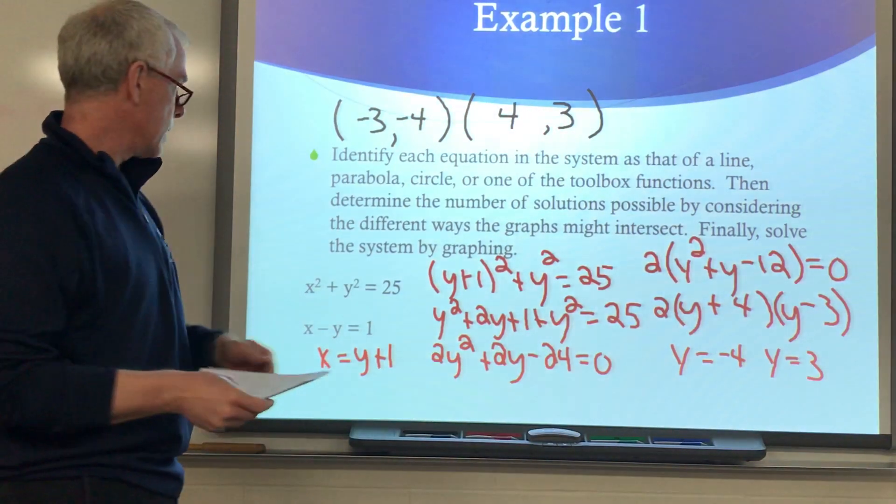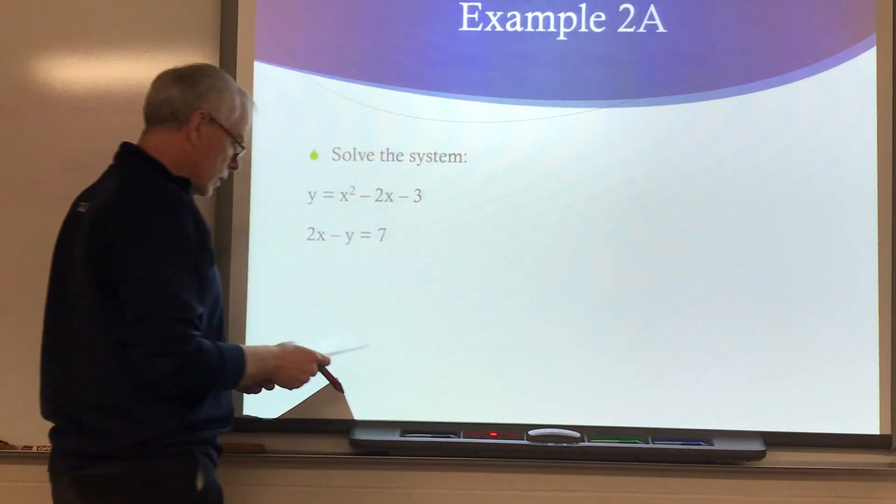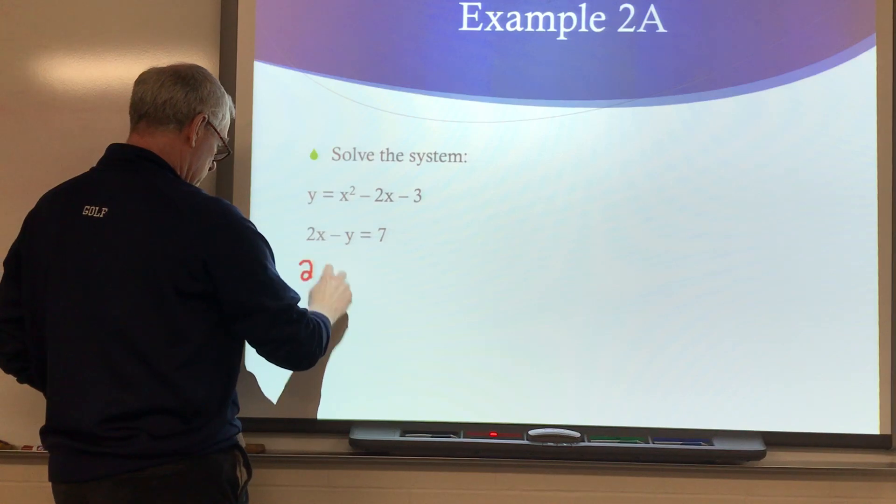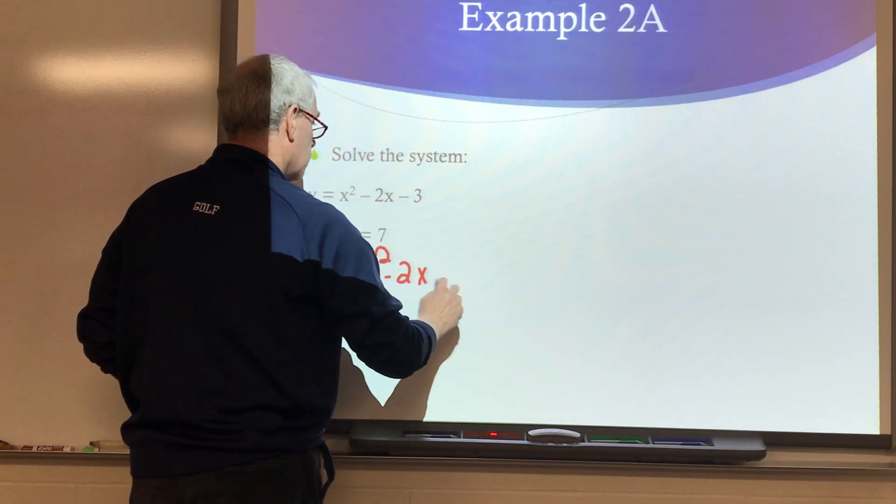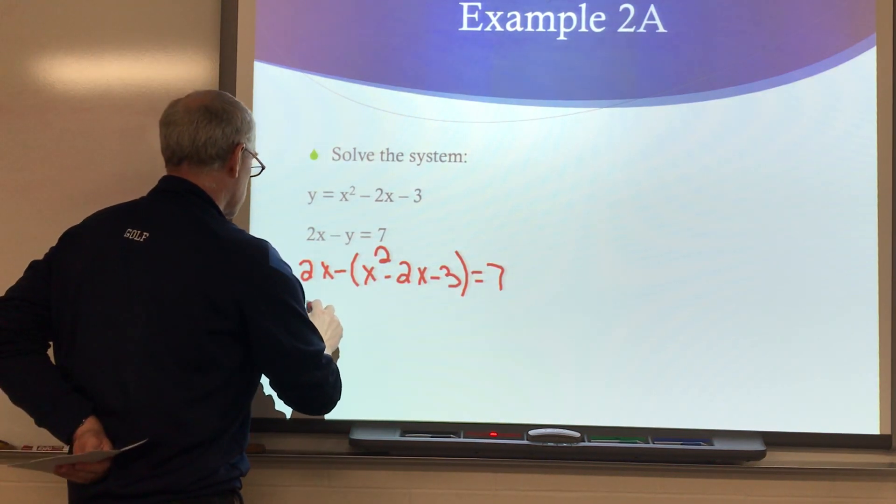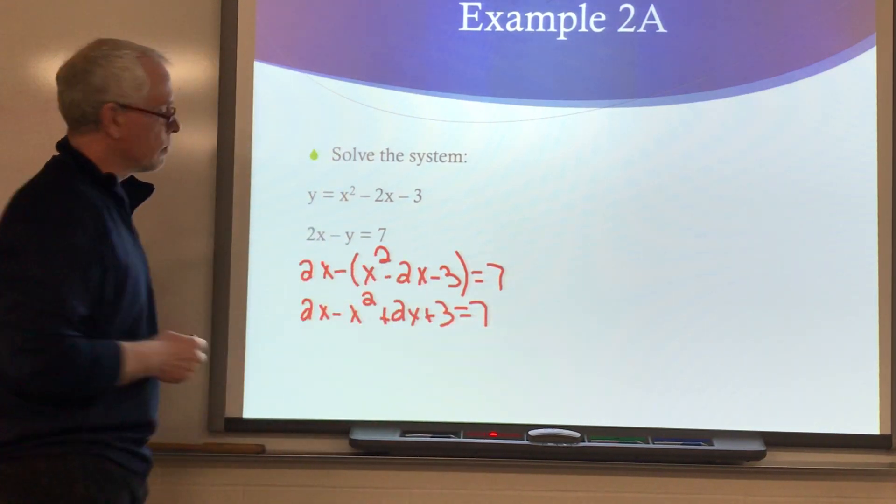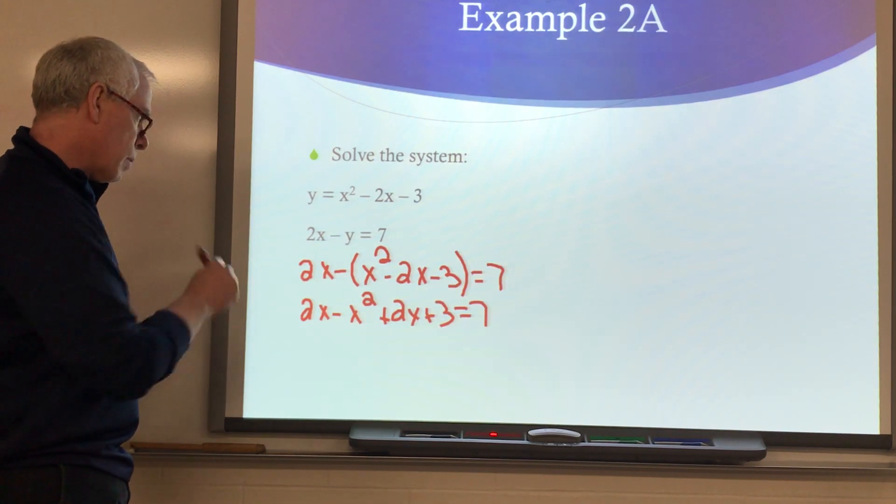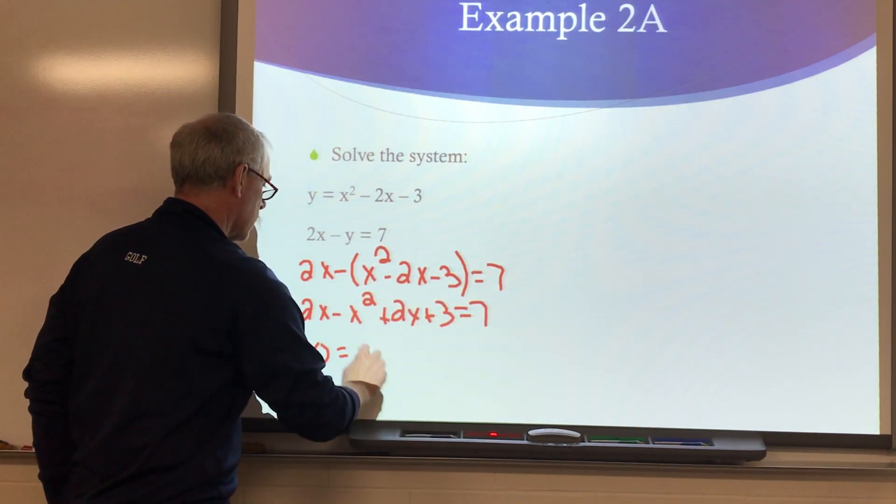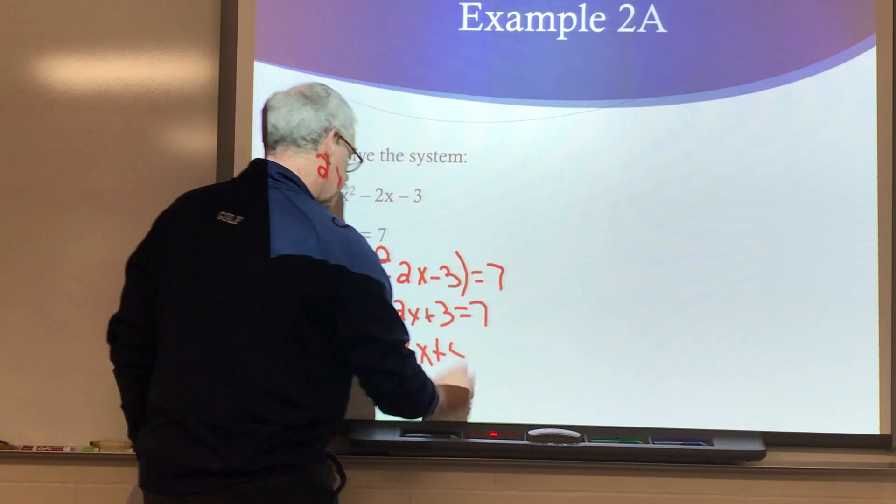All right, solve this system. Well, I've already got y solved for here, you guys. So I'm going to replace this y with that expression. So I'm going to write 2x - (x² - 2x - 3), so 2x minus this y now equals 7. Simplify a little bit. This is going to be 2x - x² + 2x + 3, distributing that negative into the parentheses. Now, I'm going to move everything to the right side because I want to have a positive out in front of my x squared. So I'm going to write 0 = x² - 4x + 4.